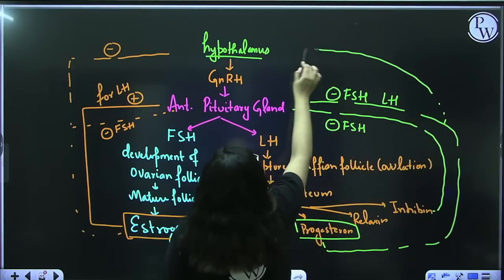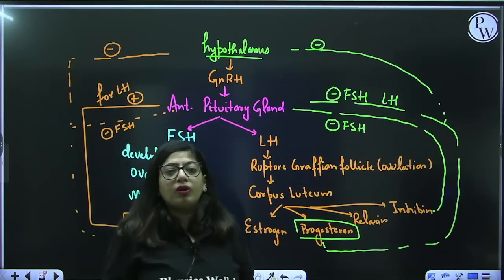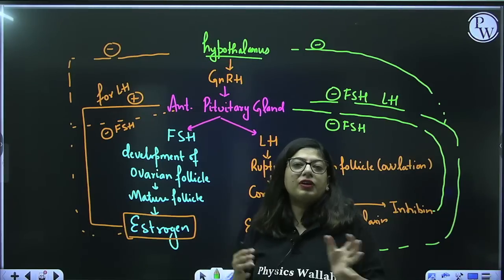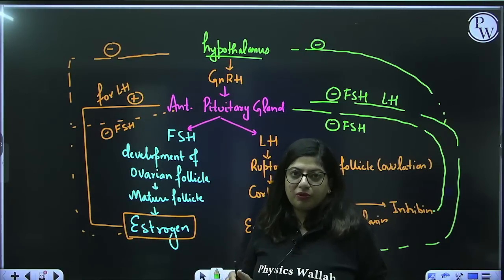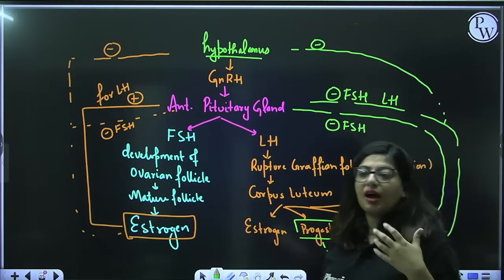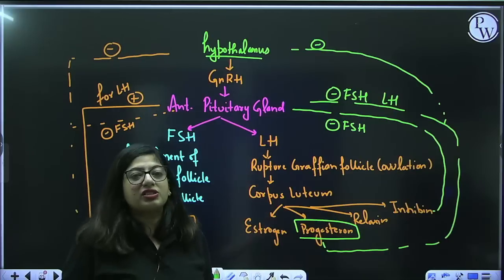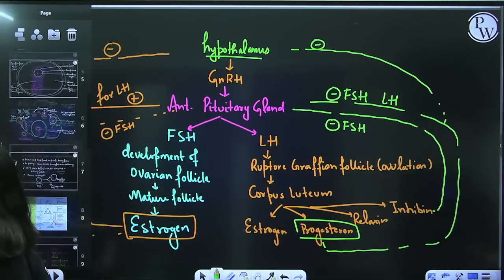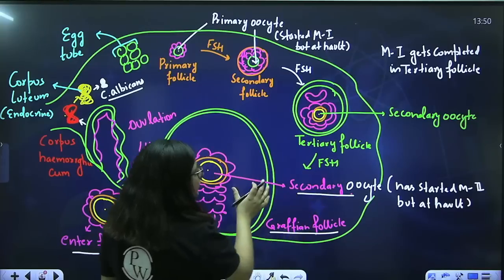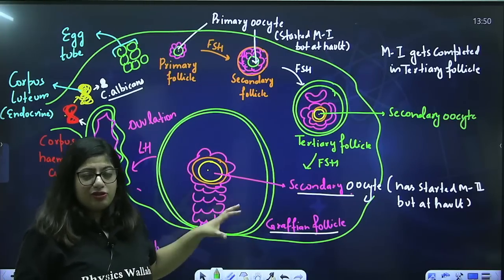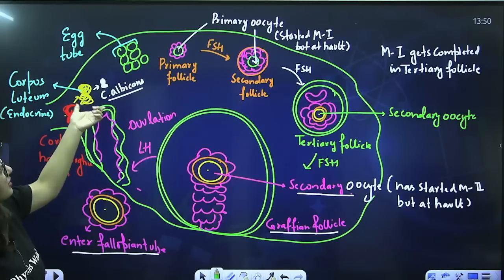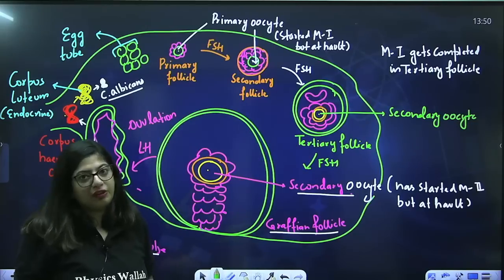Progesterone gives negative feedback to the pituitary gland for both FSH and LH. So if progesterone level rises in blood, it keeps telling the pituitary to stop both hormone secretions. Progesterone can also give negative feedback to the hypothalamus. Negative feedback means: if something is in high quantity, it stops the secretion of something else. If estrogen is in high quantity it stops FSH secretion; if high estrogen gives positive feedback for LH, it tells the pituitary to secrete LH. This is how all the hormones are regulated — FSH controls follicle maturation, mature follicle secretes estrogen, estrogen leads to LH secretion, LH causes ovulation, corpus luteum develops, it secretes progesterone, which gives negative feedback so no further follicle develops.